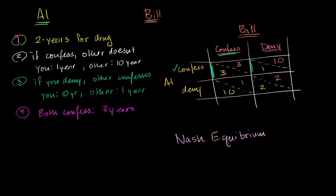Now we look at it from Bill's point of view, and it's completely symmetric. Bill says, well, I don't know if Al is confessing or denying. If Al confesses, I can confess and get three years, or I can deny and get 10 years. Well, three years in prison is better than 10, so I would go for the three years if I know Al is confessing.